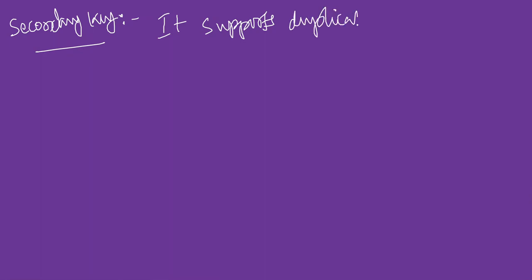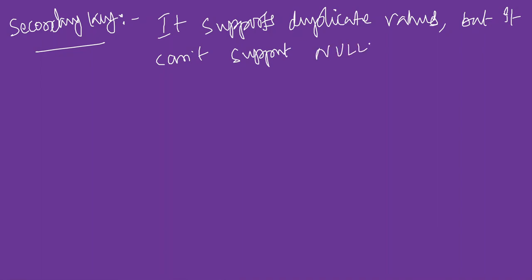The next key constraint is secondary key. Secondary key supports duplicate values, but it cannot support null values. So logically, duplicate values are allowed but null values are not allowed in a secondary key field.